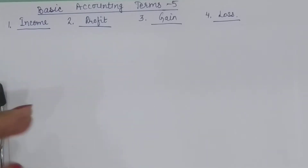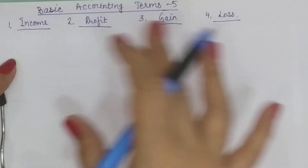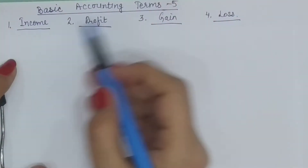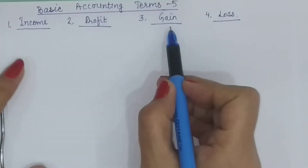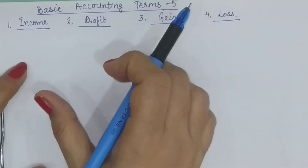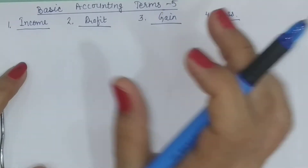In accounting, there are different terms being used to show or record the profits. In normal language we use these terms interchangeably — profit, income, gain. But in accounting, in tino ke alag-alag meanings hain, aur alag-alag context mein these are used.